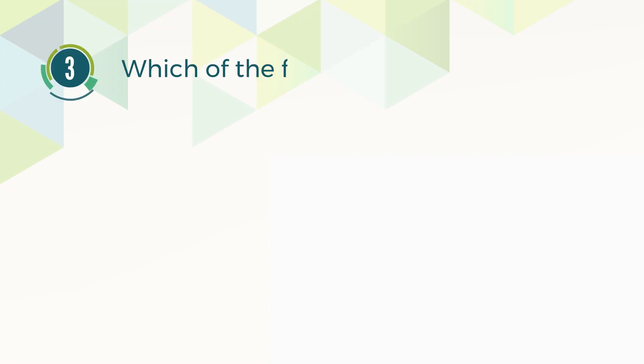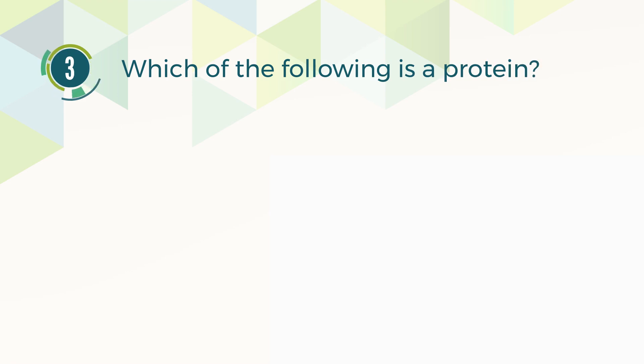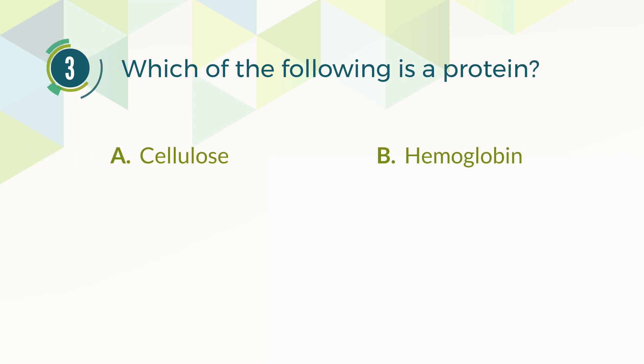Number 3. Which of the following is a protein? A. Cellulose. B. Hemoglobin. C. Estrogen. D. ATP.